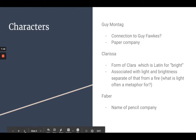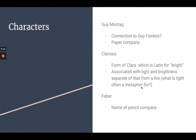For characters: Guy Montag is the protagonist, and his name might be related to Guy Fawkes Day — a person in British history who blew up Parliament. It's also a reference to a paper company. We also have Clarissa, who appears at the beginning of the story. She is a character that brings knowledge and information to Guy and enlightens him. Clarissa is a form of Clara, which is Latin for bright — associated with light and brightness, separate from that of fire. Consider what light is often a metaphor for, and what Clarissa might symbolize. Also, Faber is the name of a pencil company.